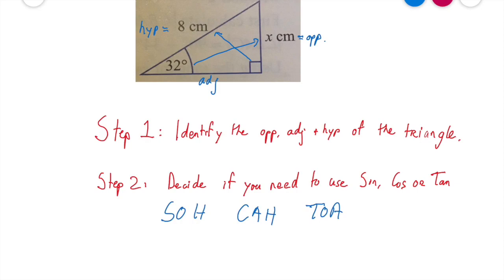Do we have the adjacent? No we don't. We have the hypotenuse but we don't have the adjacent, so we know it's not going to be cosine. And in tan we have the opposite side, we don't have the adjacent, so it can't be tan. So our answer is going to be sine.